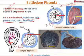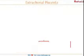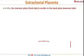Now let's talk about the next type of placental abnormality: extrachorial placenta. Normally, the chorionic plate — that is the fetal side of the placenta — and the basal plate — that is the maternal side of the placenta — both are equal in surface area. But if the fetal side is smaller than the maternal side, then it is called extrachorial placenta.